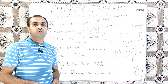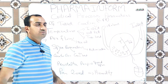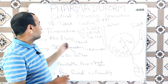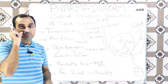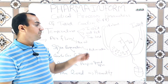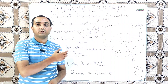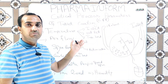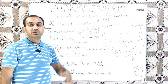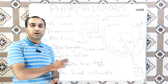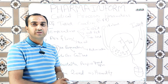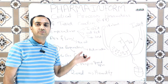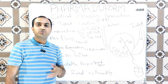First of all we will discuss the critical process parameters of temperature. Here we have inlet air temperature, outlet air temperature, and tablet bed temperature. We will discuss a brief overview and try to understand the impact of each parameter on the others, because in coating all parameters must be synchronized with each other.